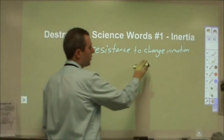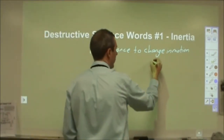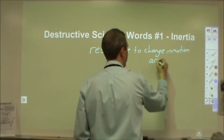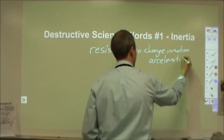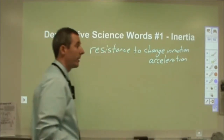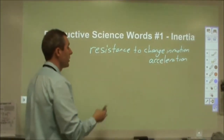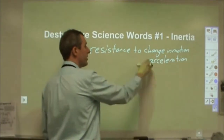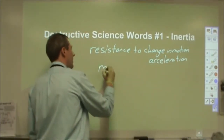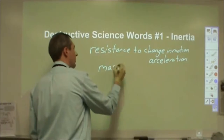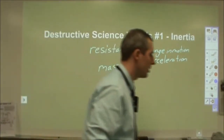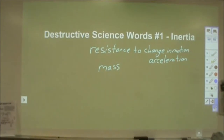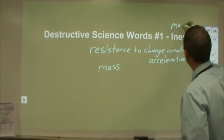Resistance to change in motion — change in motion is a fancy way of saying acceleration. Really it's an imprecise way of saying acceleration. Resistance to acceleration — well, that is mass. The more mass you have, the more resistance you have to a change in motion, the more resistance you have to an acceleration. So inertia is the same thing as the word mass.